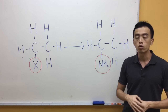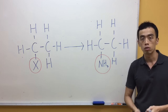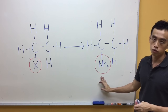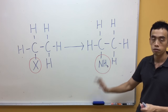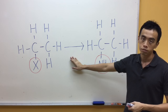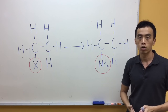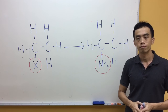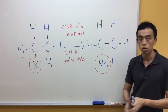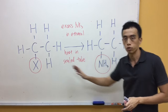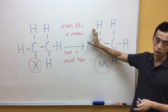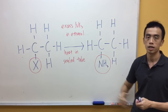Now the third reaction is again a nucleophilic substitution, but this time converting our halogen to an NH2 functional group — our amine functional group. The reagents and conditions for this conversion are excess ammonia in ethanol, heat in a sealed tube.